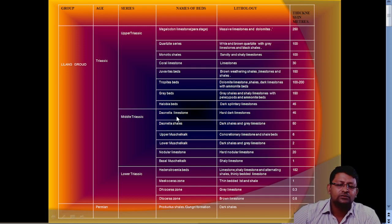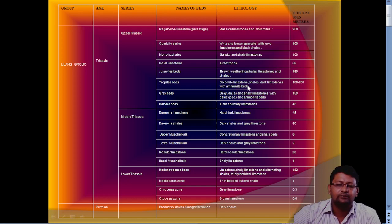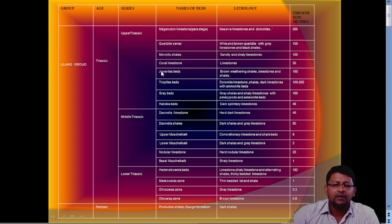Danula shales have hard dark limestone lithology and a thickness of 45 meters. Then we have grey beds — grey shales and shelly limestone with pelecypods and ammonoid beds — thickness is 150 meters, which is quite thick. Then we have propoid beds: dolomitic limestone, shale, dark limestone, with ammonoid beds, around 100 to 200 meters thick — the second thickest succession of the Triassic of Spiti after Megalodon.